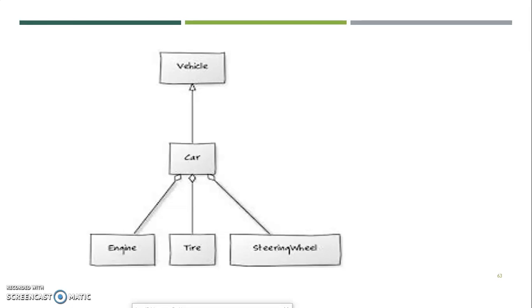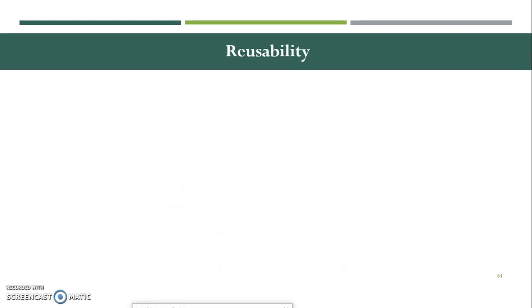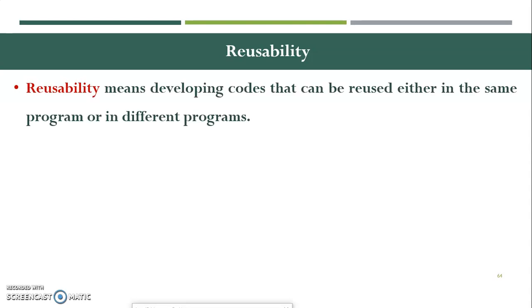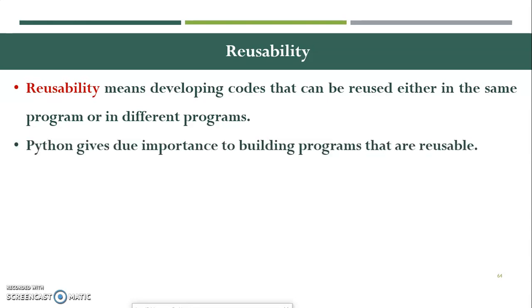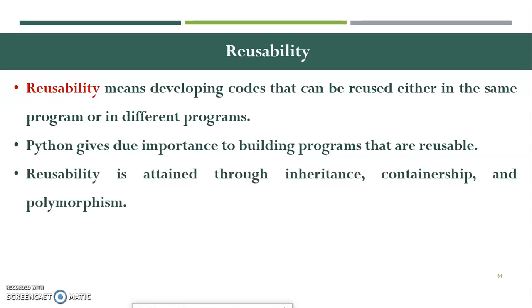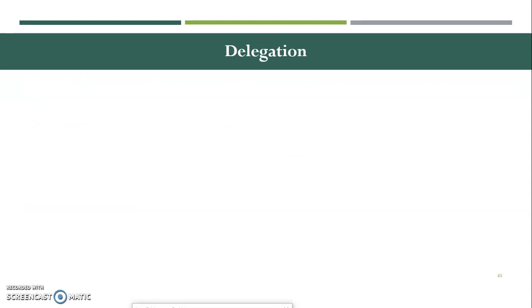Reusability is a very important feature of Python and any object-oriented programming language. We have understood it across many concepts — inheritance, polymorphism — everything solves the same purpose of reusability, where we do not rewrite the code but reuse it. Reusability means developing code that can be reused either in the same program or in different programs. Python gives due importance to building reusable programs. Reusability is attained through inheritance, containership and polymorphism.